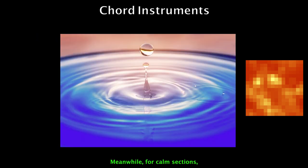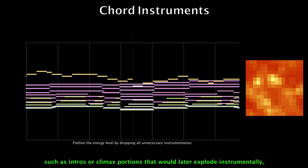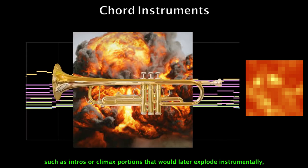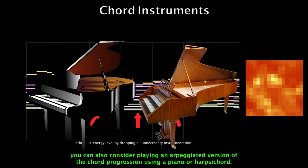Meanwhile, for comp sections such as intros or climax portions that would later explode instrumentally, you can consider playing an arpeggiated version of the chord progression using a piano or harpsichord.